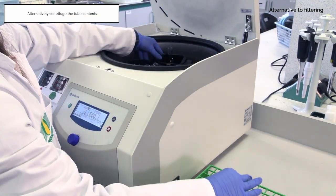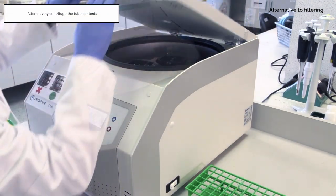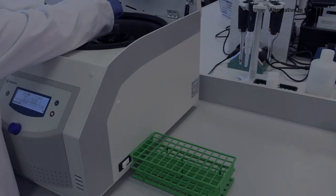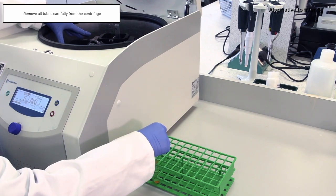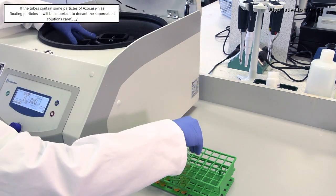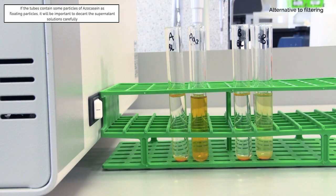Alternatively centrifuge the tube contents. Remove all tubes carefully from the centrifuge. If the tubes contain some particles of azo casein as floating particles, it will be important to decant the supernatant solutions carefully.